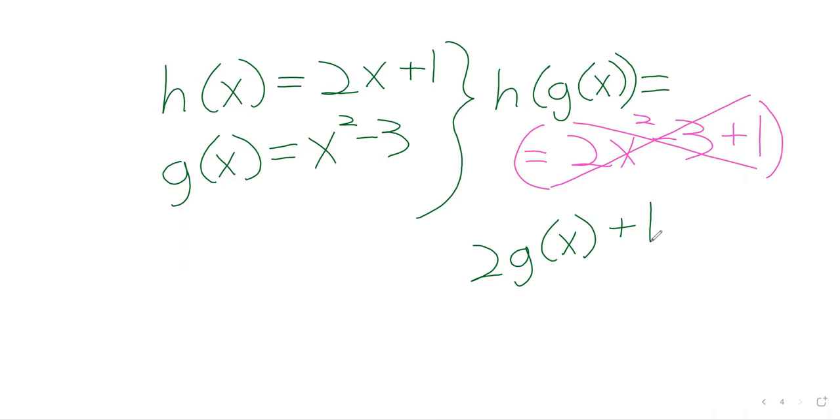Here in the pink, we're only multiplying the x squared by 2. But all of g(x) is being multiplied by 2, including this negative 3. So if we put parentheses in, we will get something different from that error we had in pink. We'll get 2x squared minus 6 plus 1, which is 2x squared minus 5. Sorry for doing that last step in my head, but I was running out of room.